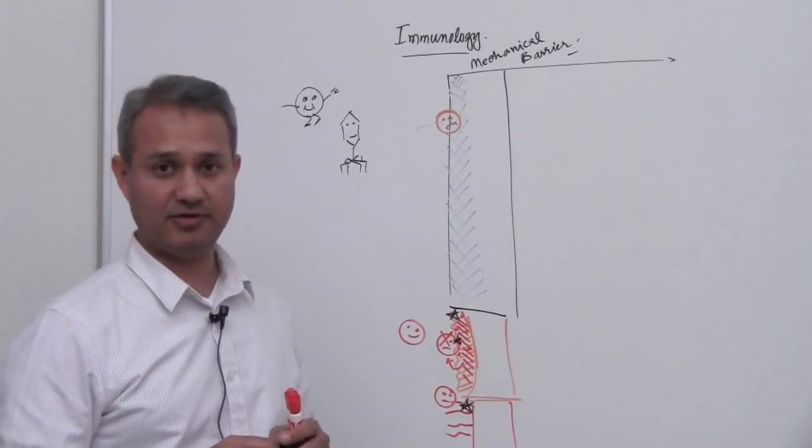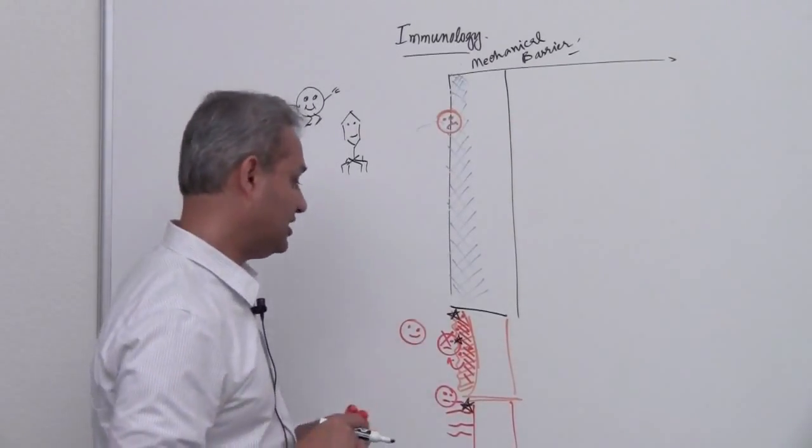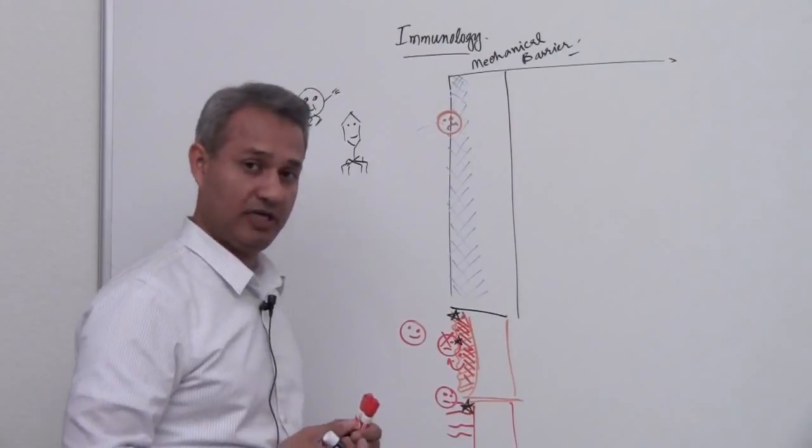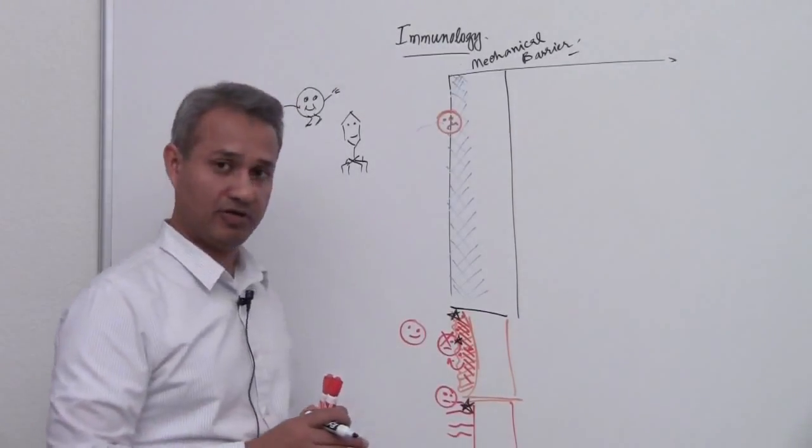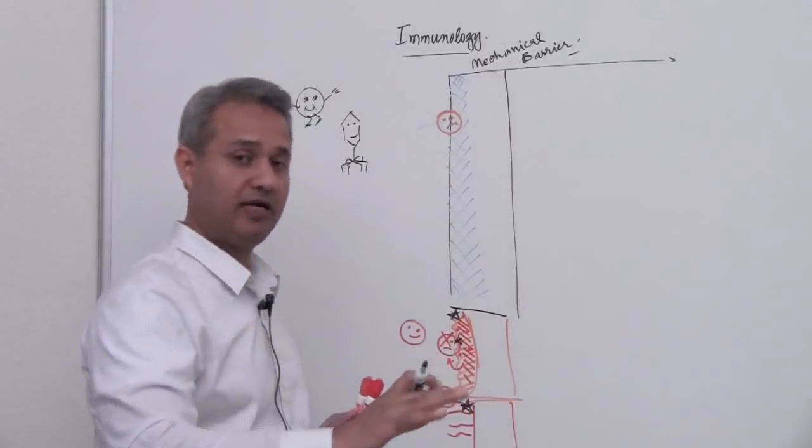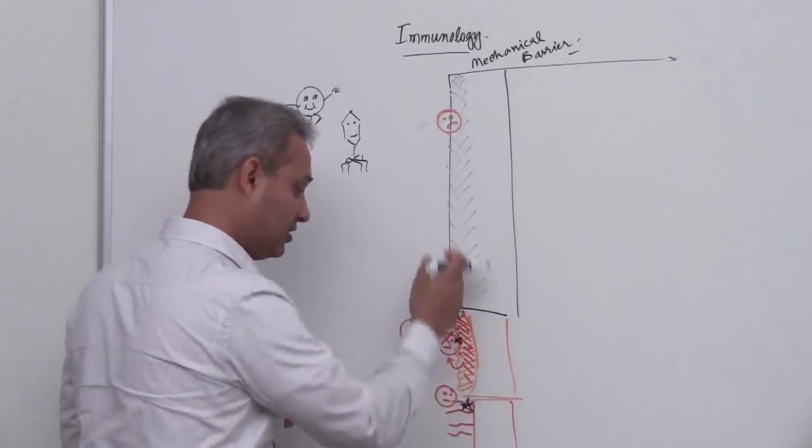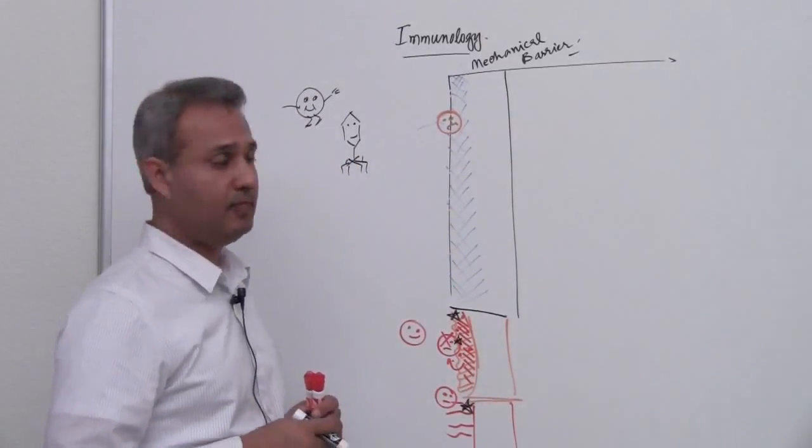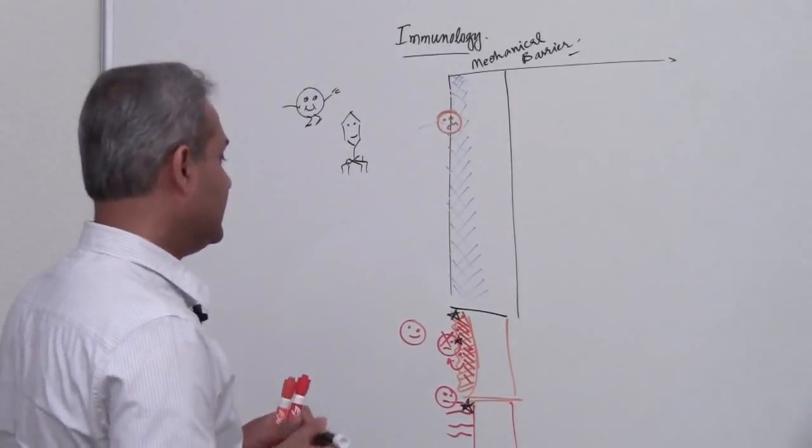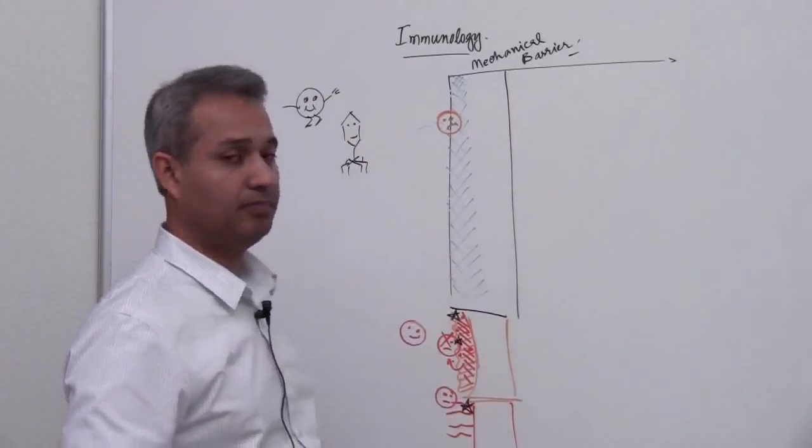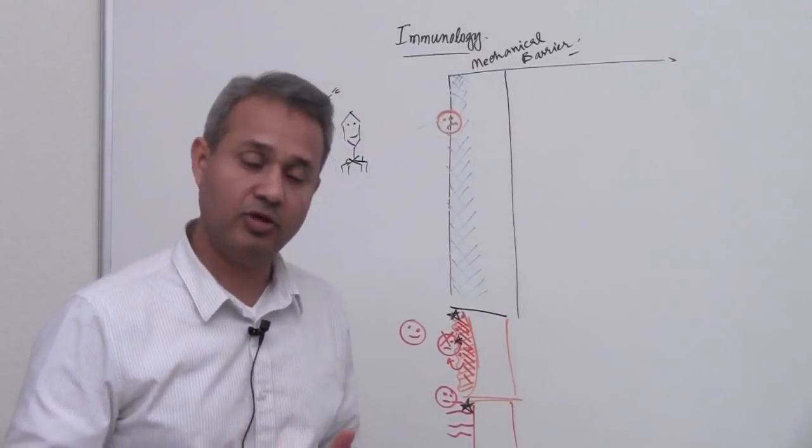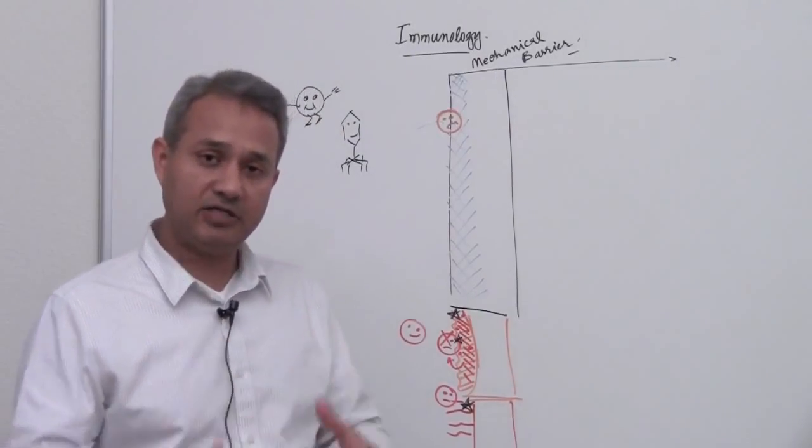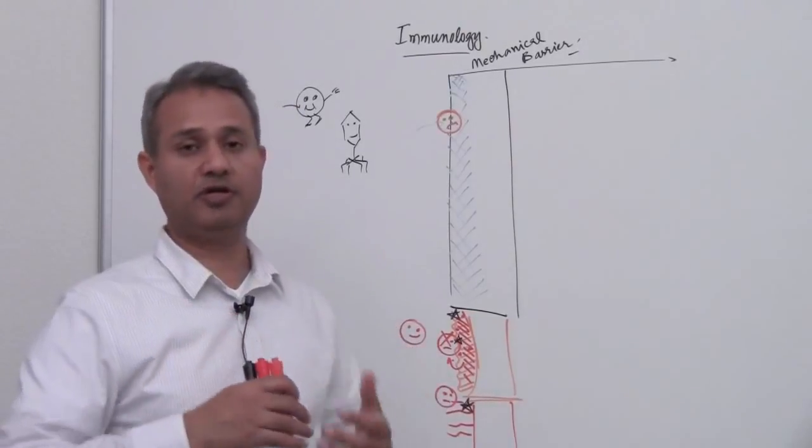brain of that bacteria. So defensins can actually act to break the microorganism which is trying to enter our body at the surface level. So really if you look at it, these are all various mechanical barriers which will try to prevent the entry of a microorganism in our body.